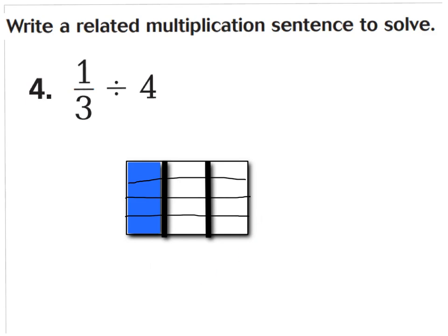Now out of this whole, one-third divided by four would equal how much? What is one part of that? It would be one out of twelve. Because you can see we have twelve parts total — one, two, three, four, five, six, seven, eight, nine, ten, eleven, twelve. So let's go ahead and shade in one of those parts. You can see one-third, which is right here out of three parts. We're dividing that one-third into four parts. What's the value of each one of these parts? You would have one-twelfth.